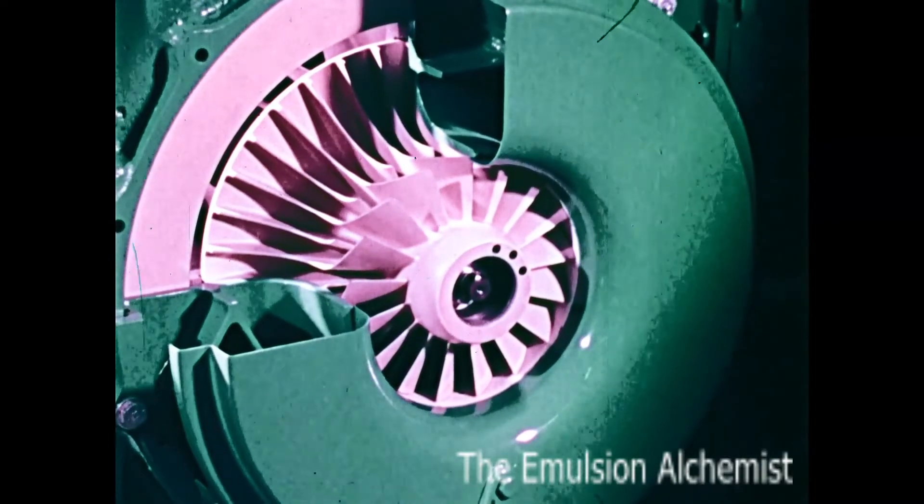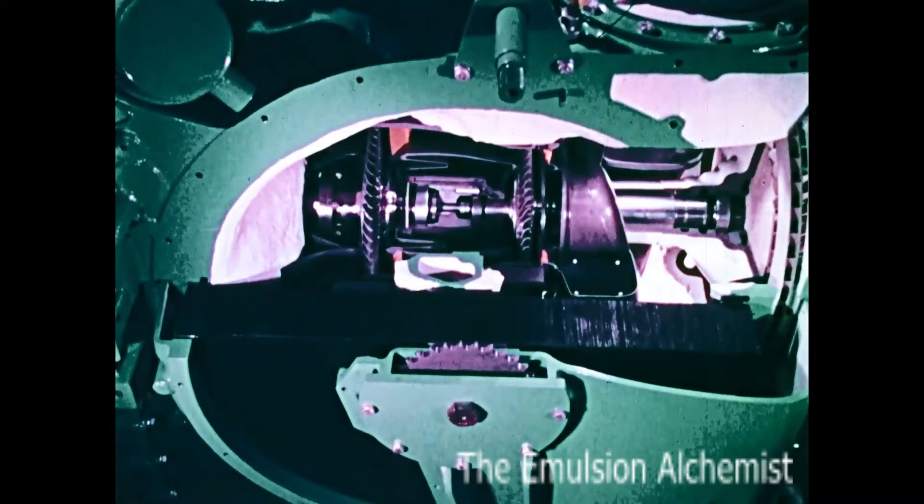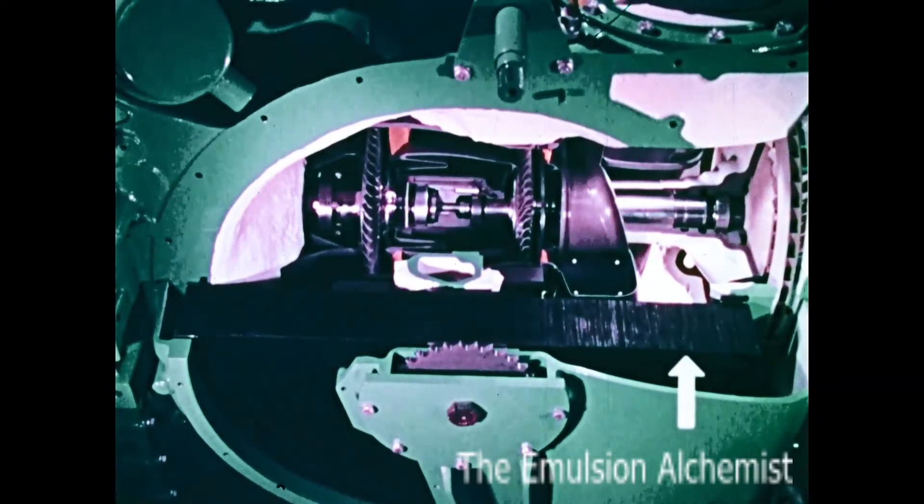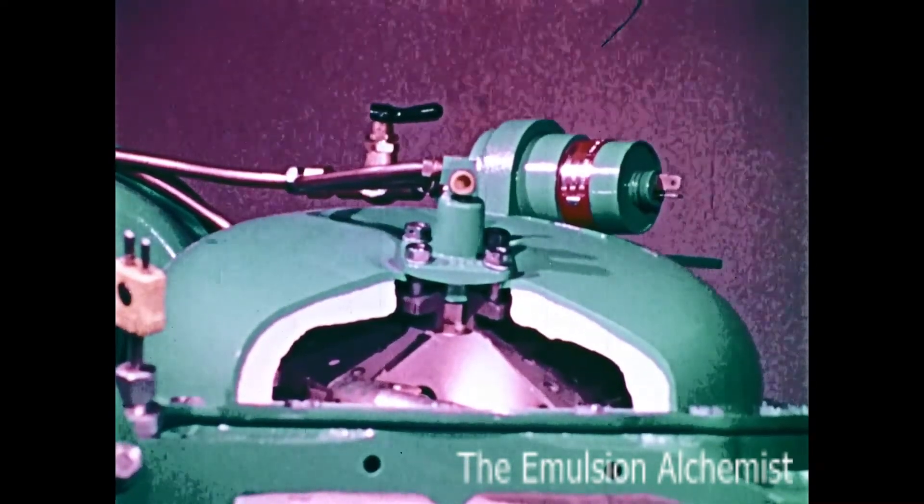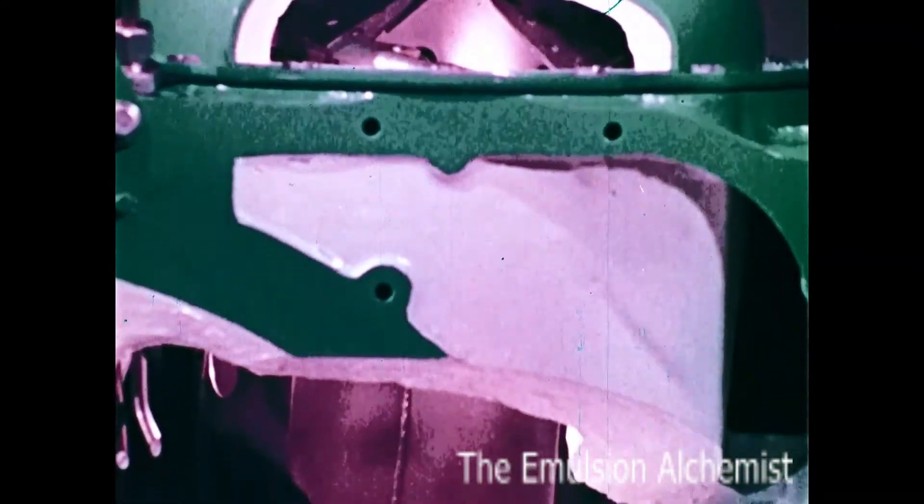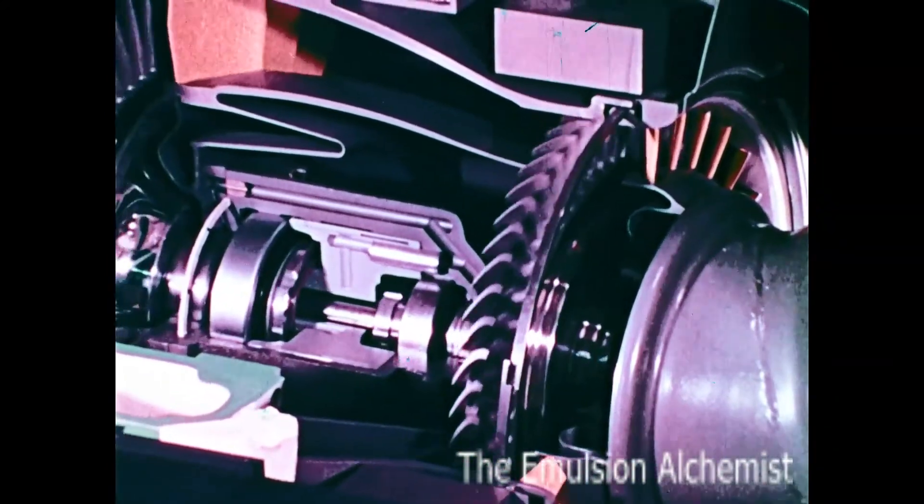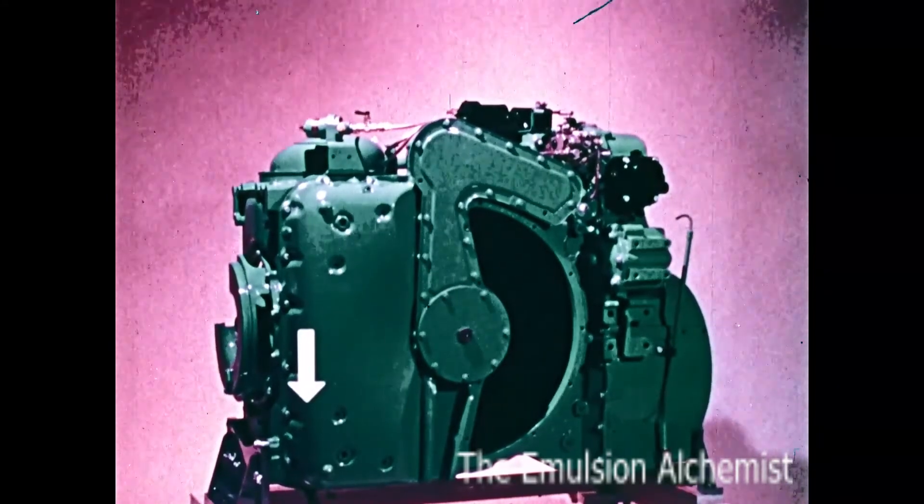Air enters the intake, is compressed by the compressor, preheated as it passes through the regenerator, and supports combustion of the fuel sprayed into the combustion chamber. The hot expanding gases give up most of their energy to the gas generator and power turbines, and give up some of their remaining heat to the regenerator, and flow out of the exhaust.